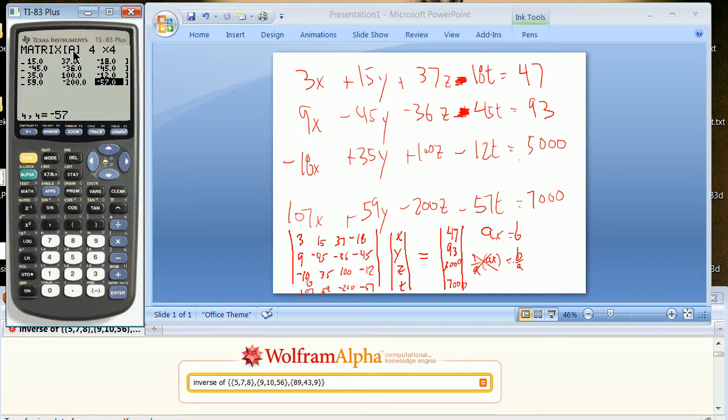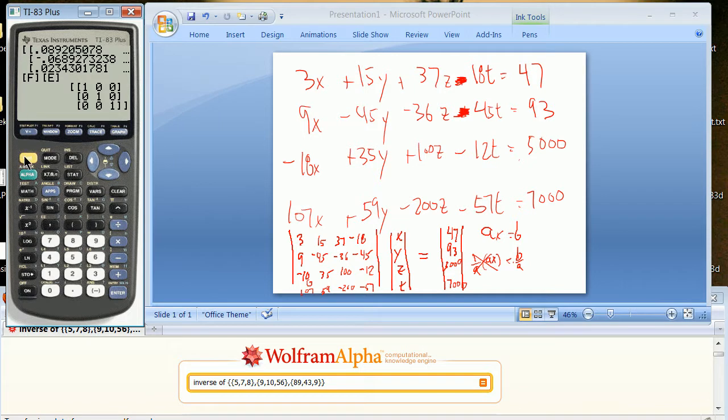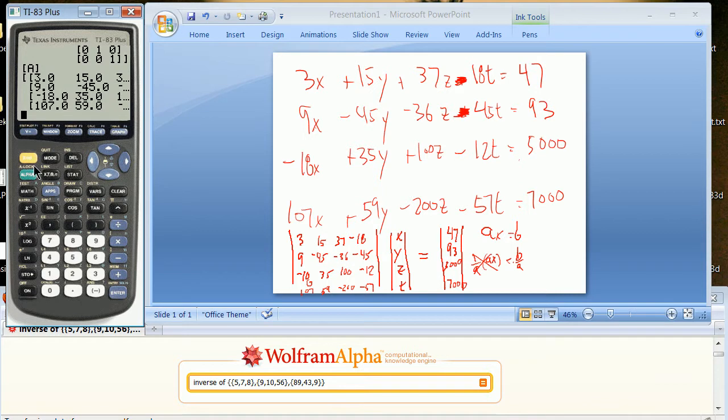Those are now stored in matrix A. I put them in matrix A, so be it. Second, quit. So matrix A, second matrix A has those values. Second matrix A inverse has those values, which you can't see because of the float.